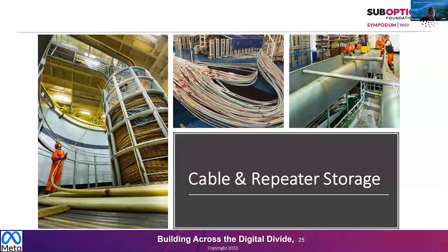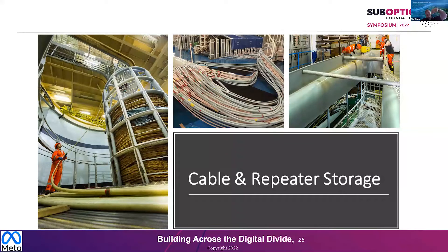One more picture: the cable loading process. You can see a person feeding cable into the cable tank on the ship. Normally there would be several people walking around inside the tank, laying it out and packing it in as tightly as possible — a process that takes days. The repeaters are stored on the ship and the cable winds around in the tank. You have to come out of the tank to store the repeater and then go back in and keep filling it up. The loading process is a very difficult logistical one — you have to put the cable in reverse of the direction you'll lay it.